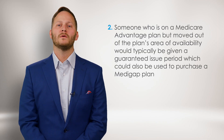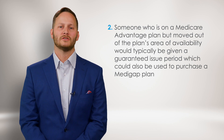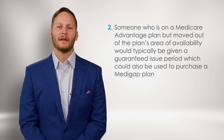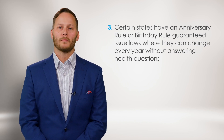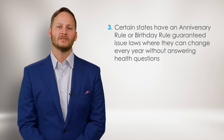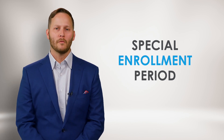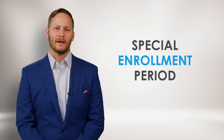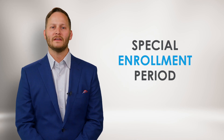Another example: someone who is on a Medicare Advantage plan but moved out of the plan's area of availability would typically be given a guaranteed issue period, which could also be used to purchase a Medigap plan. Additionally, certain states have an anniversary rule or birthday rule with guaranteed issue laws, where beneficiaries can change plans every year without answering health questions. Similar to guaranteed issue rules, there are certain times you can use a special enrollment period to enroll in a drug plan or Medicare Advantage plan.